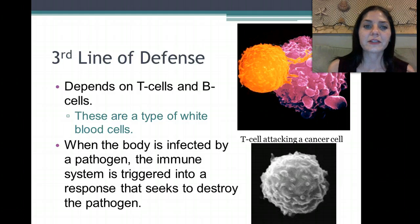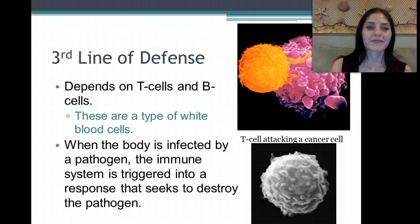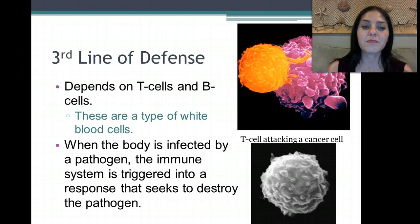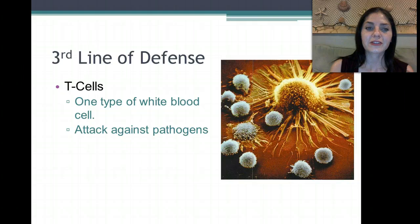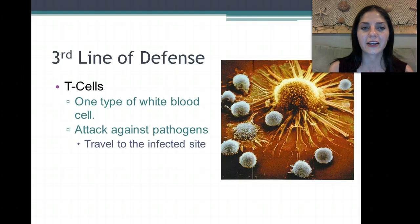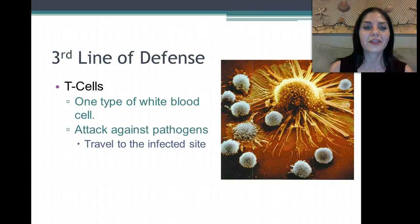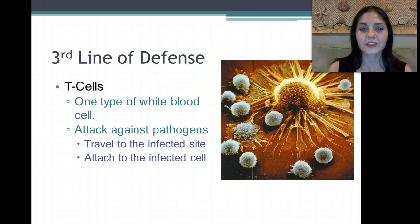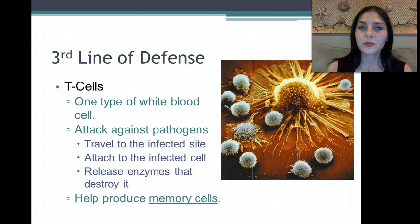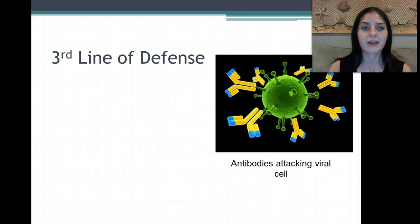The third line of defense depends on T cells and B cells. T is for thymus — these are both types of white blood cells. When the body is infected by a pathogen, the immune system is triggered into a response to seek and destroy. T cells attack: they travel to the infected site, attach to the infected cell, and release enzymes that destroy it. They also help produce memory cells so the body will remember how to destroy that pathogen if it comes back.